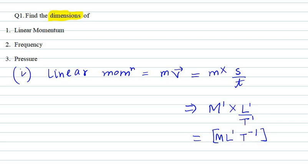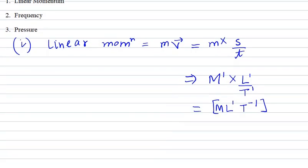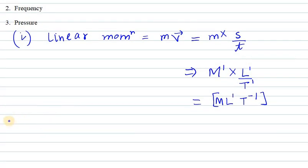The next one is frequency. Frequency is inversely proportional to time period, so 1/T¹. We have M⁰L⁰T⁻¹.